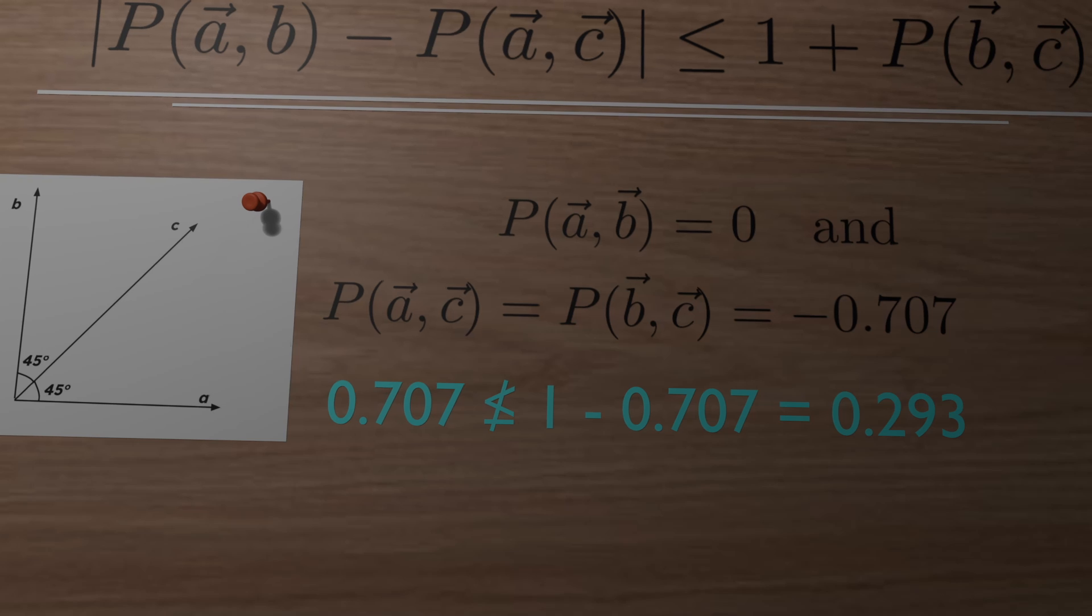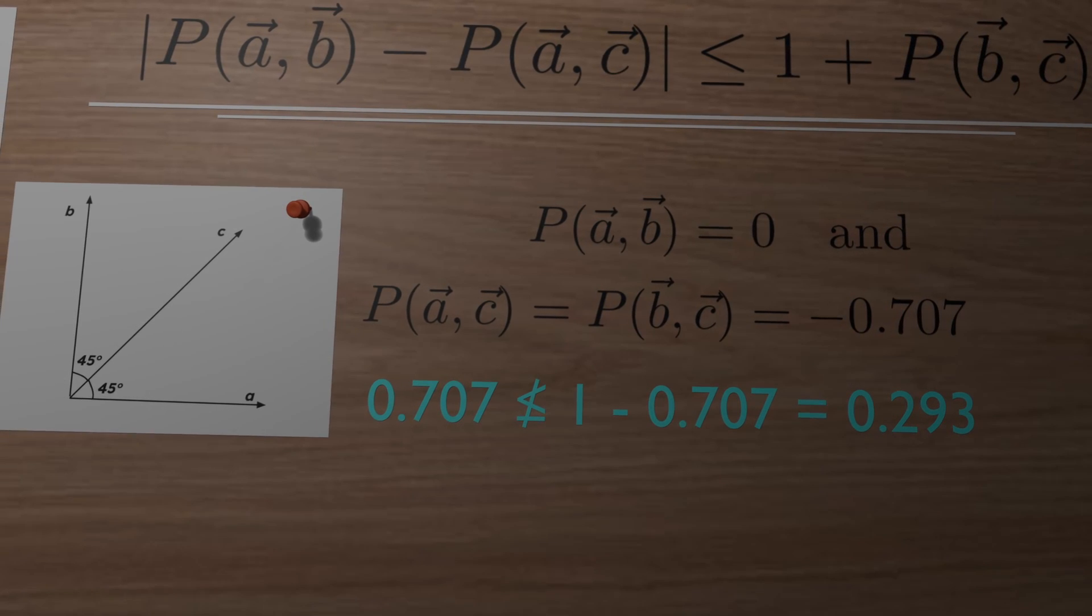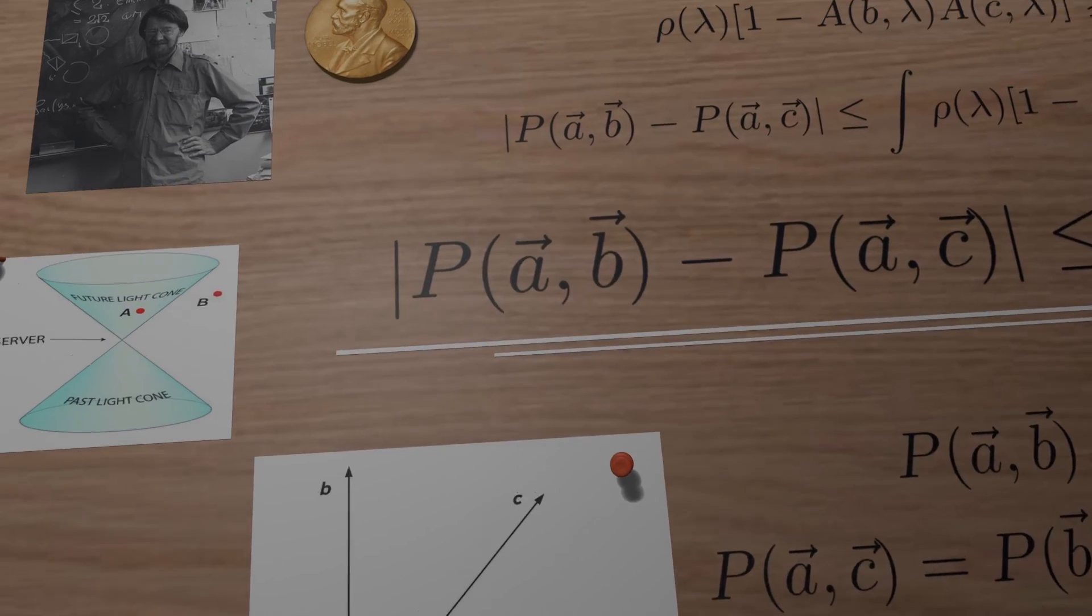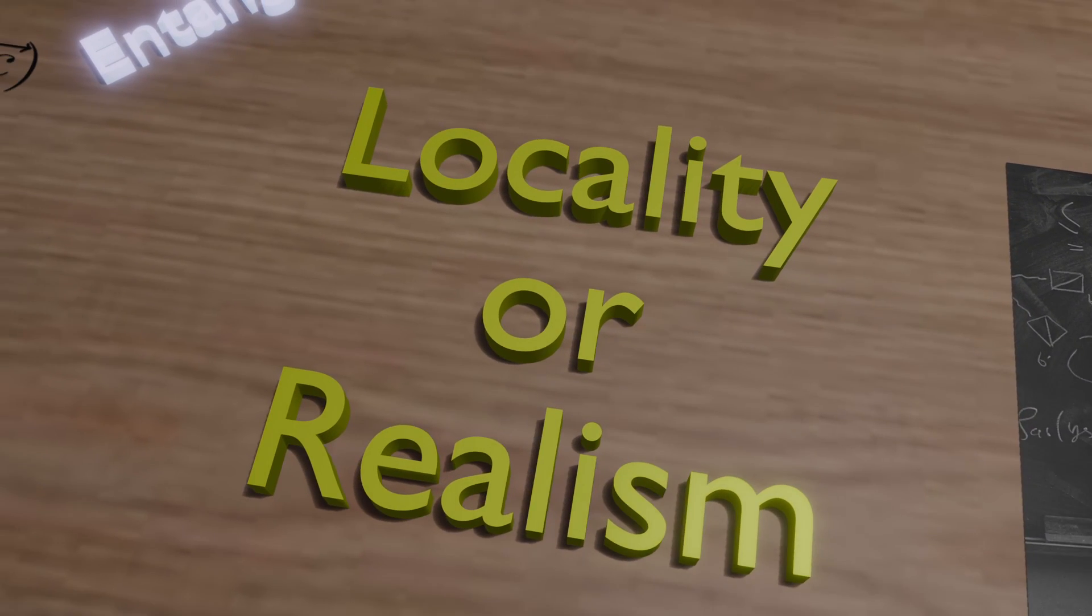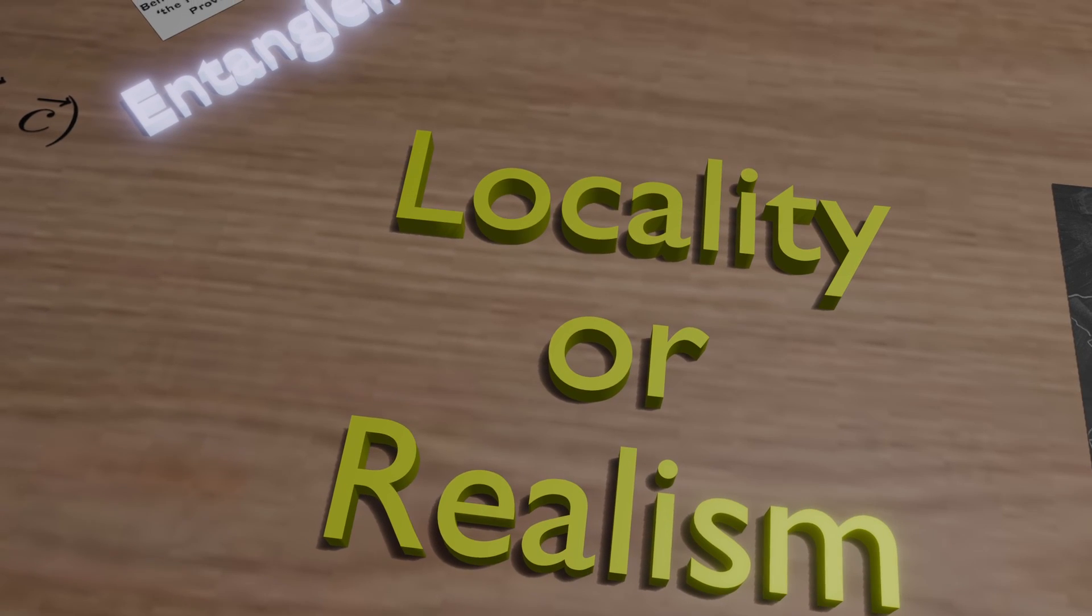This means that there cannot be any local hidden variable theory that is also consistent with quantum mechanics. Bell demonstrated that if quantum mechanics is correct, one cannot have both locality and realism.